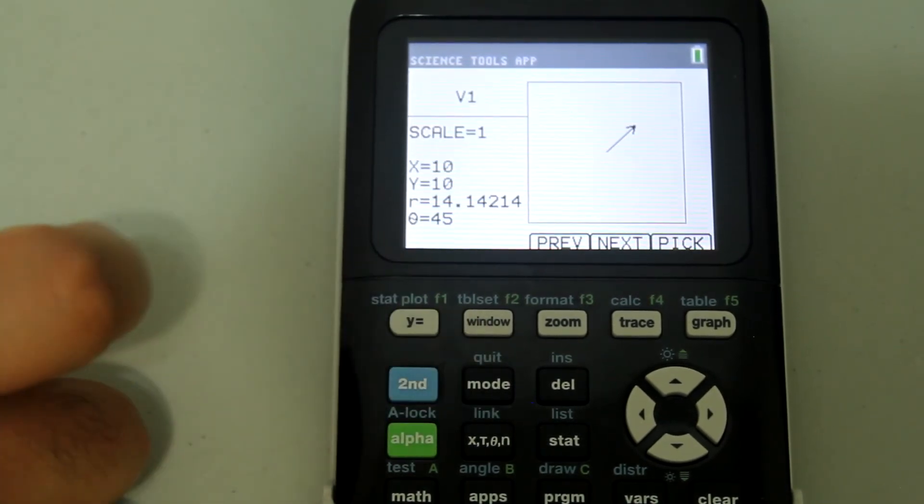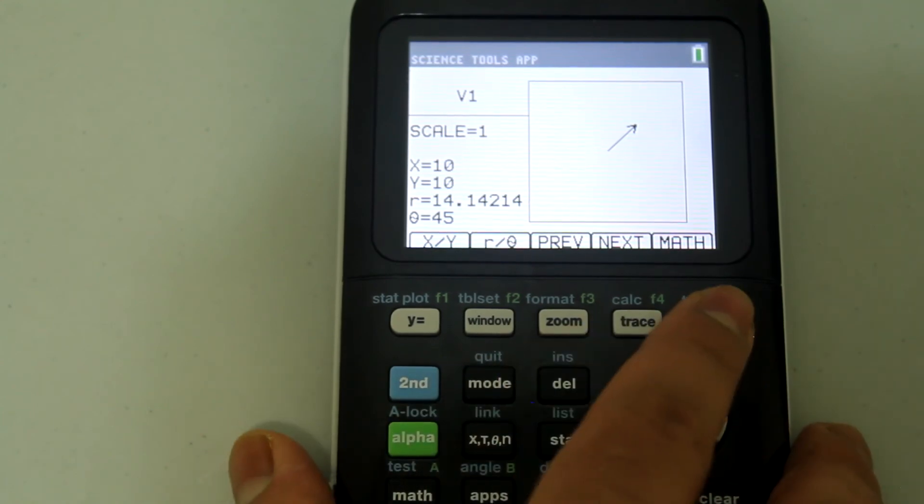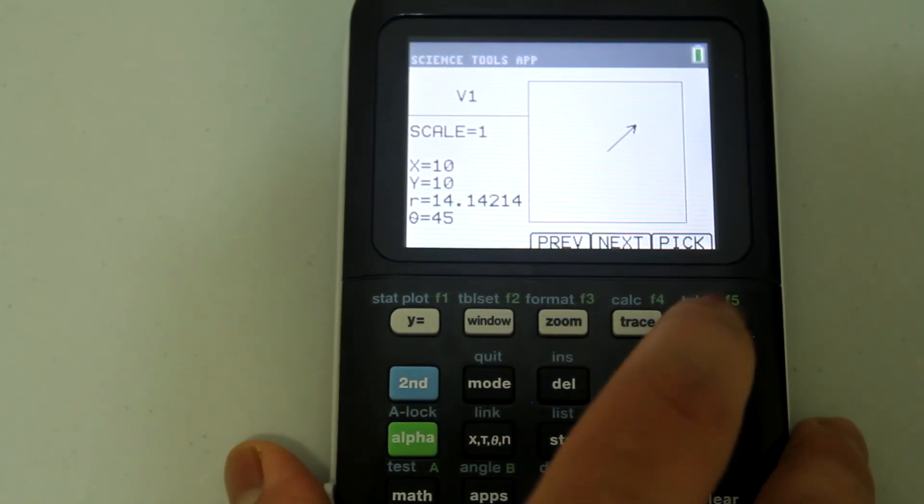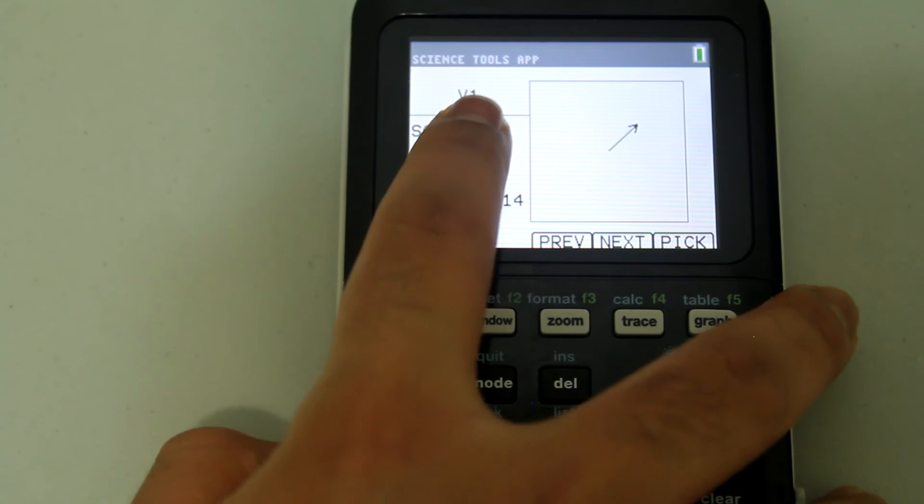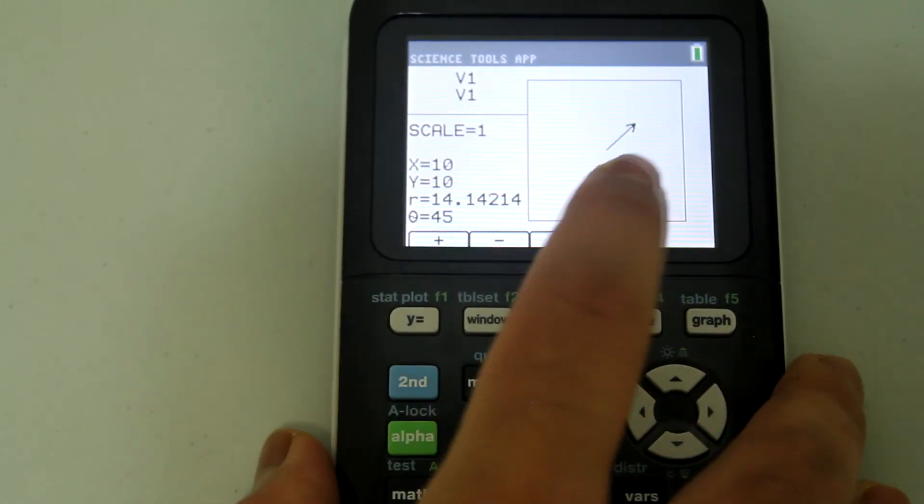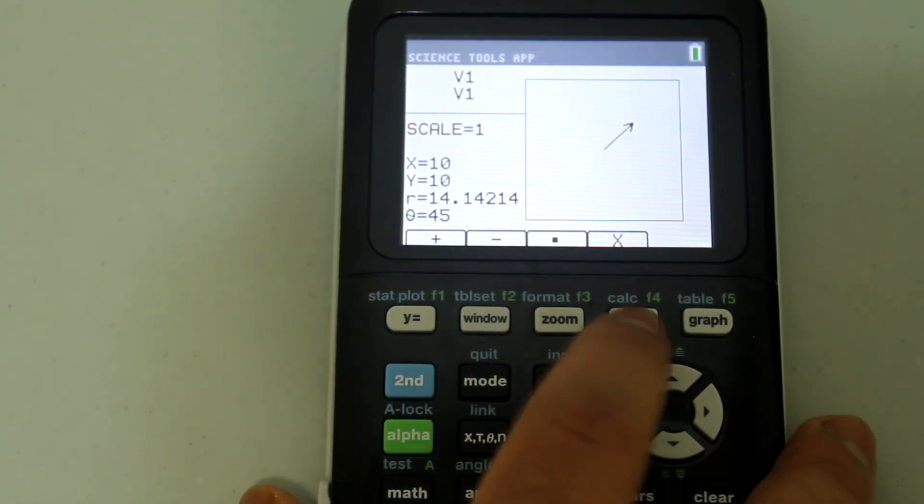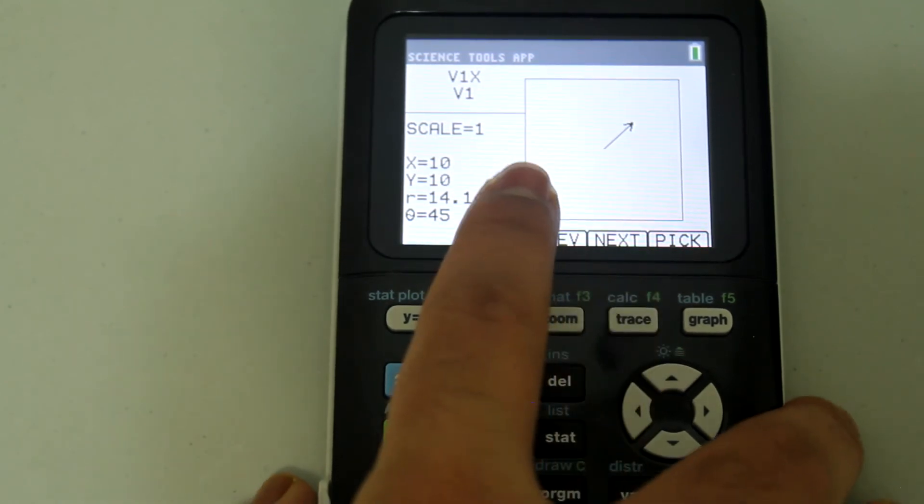Let's exit out and exit out of this also. Let's get math, pick, let's do cross product this time. So this is the cross product sign. Go underneath, hit trace. Let's do V1 cross V2, pick.